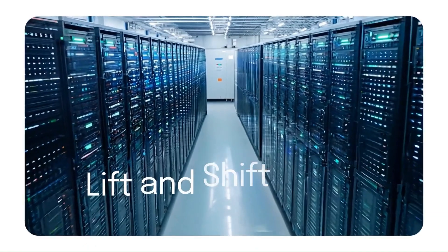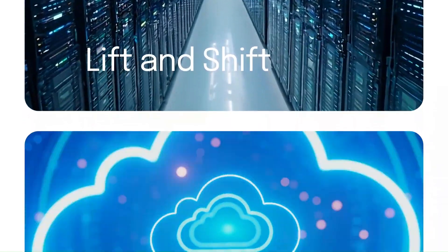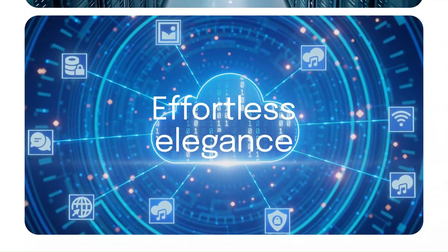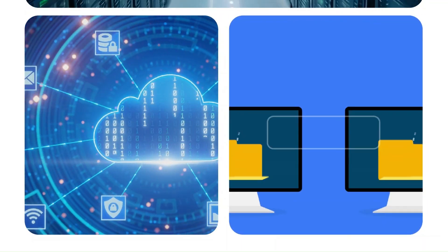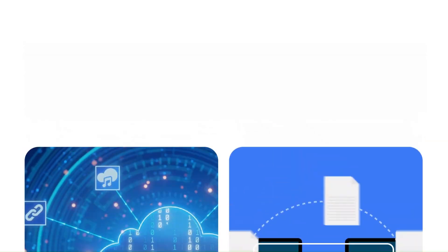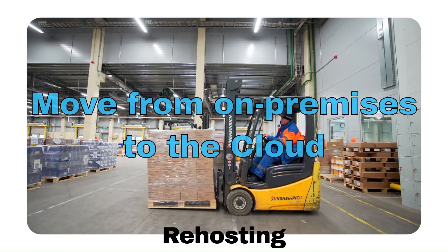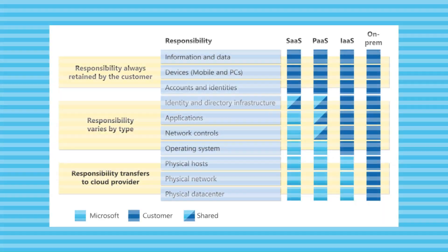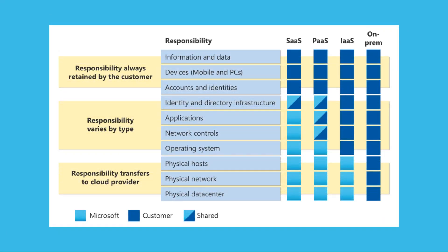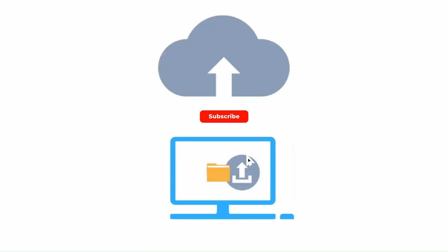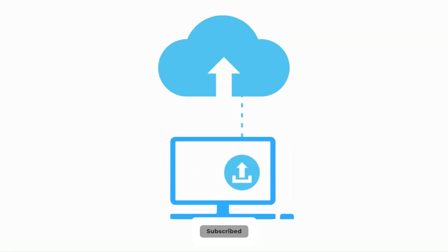Now let's talk about Lift and Shift. A typical cloud migration strategy for data migration is the Lift and Shift method. Also known as Rehosting, this involves moving applications and data from on-premises infrastructure to Infrastructure-as-a-Service in the cloud with minimal modifications, allowing organizations to quickly transfer existing workloads to cloud platforms like Azure or AWS without redesigning the application's core architecture.